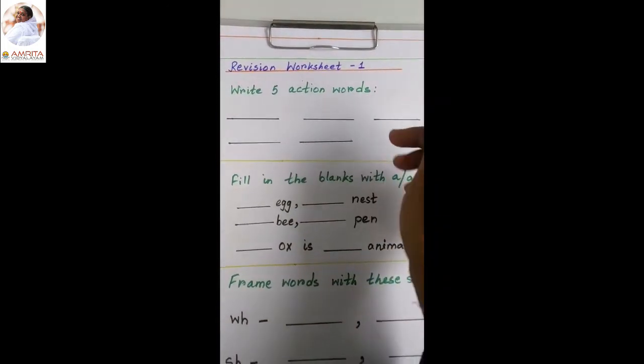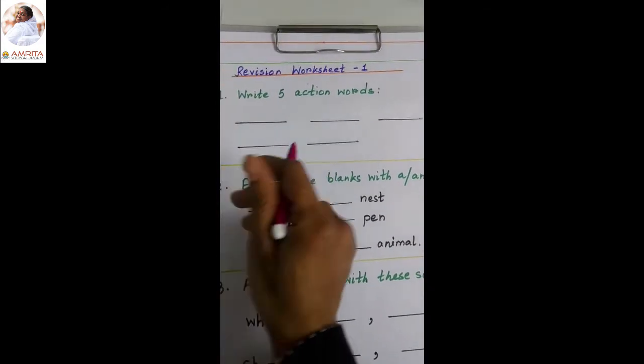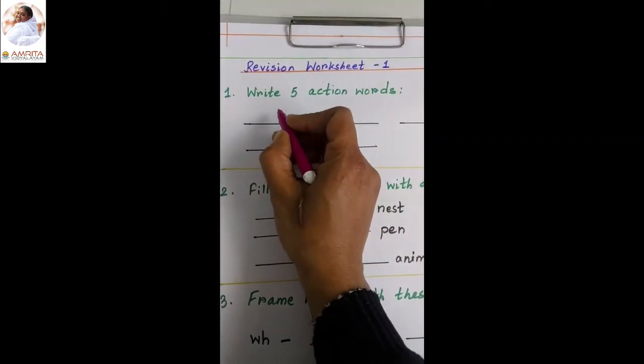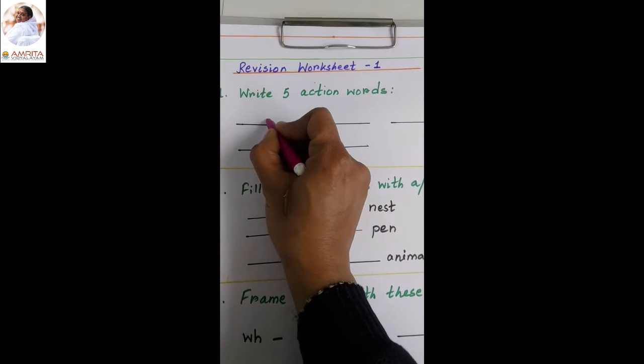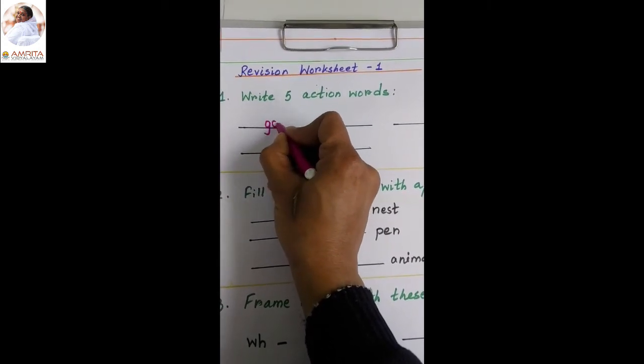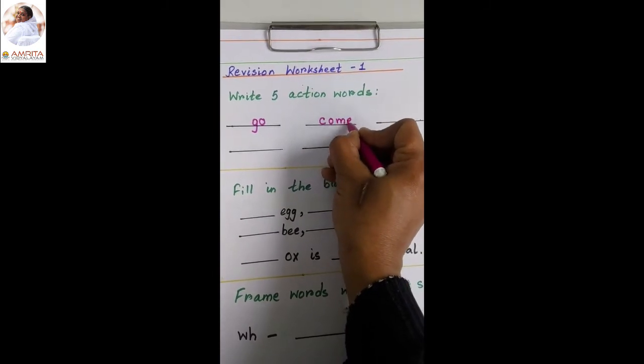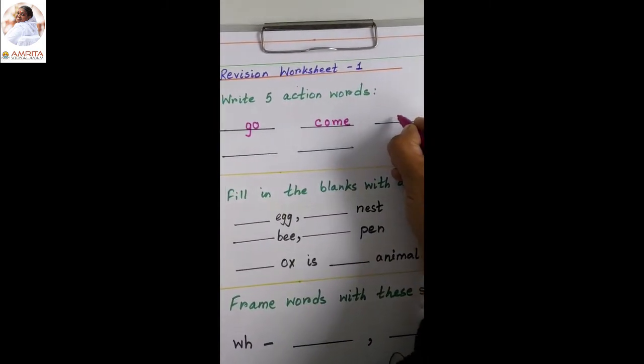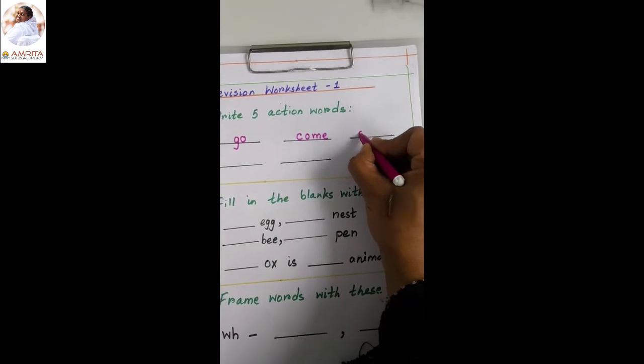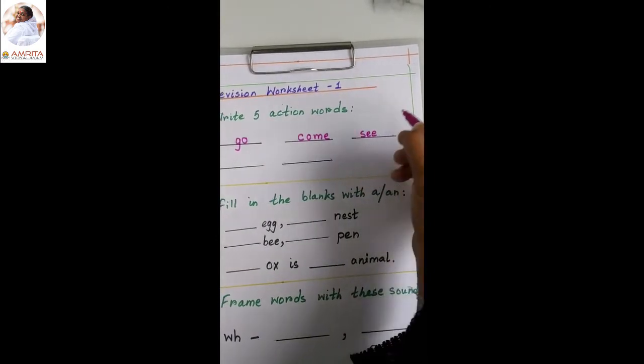Write five action words. Children, you all know action words. So let's write. What can we write as the first action word? Go, come, see.